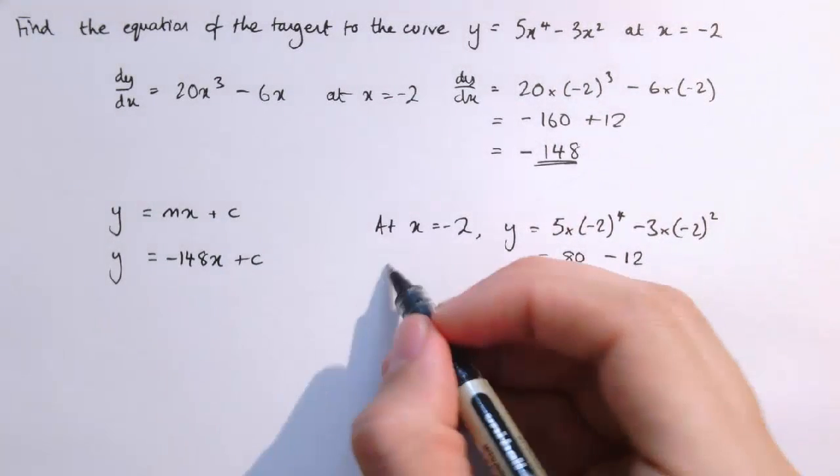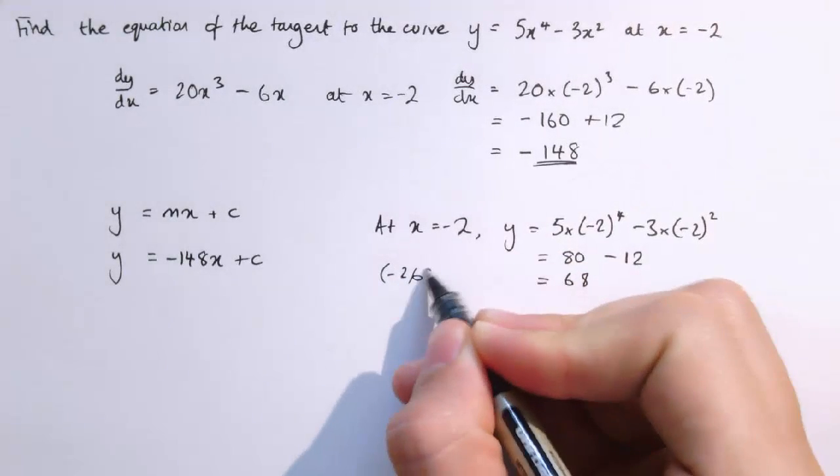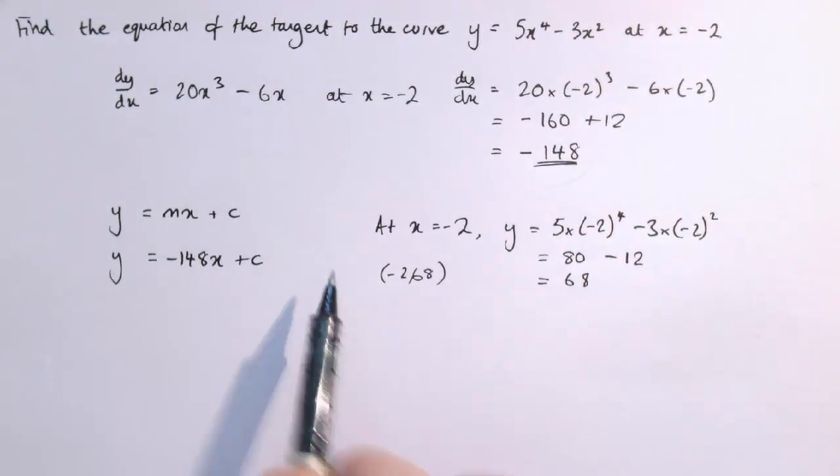So this point, x equals minus 2, y equals 68, lies on this curve and also on this tangent.